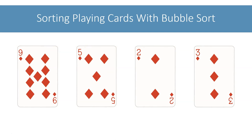I have these 4 cards and I want to arrange them in ascending order using bubble sort. After sorting, card 2 should be first, followed by card 3, then card 5, and card 9 should be last. In bubble sort, we compare adjacent elements and swap them if they are in wrong order.